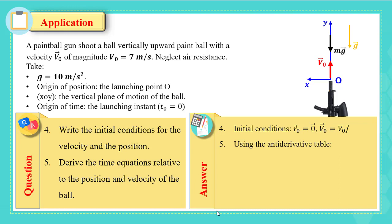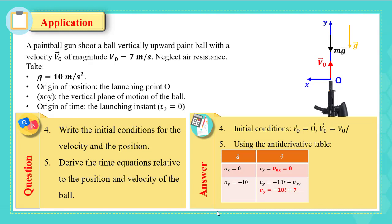The acceleration components: aₓ = 0 and aᵧ = −10 (negative because it is opposite to the positive y-axis). For velocity: vₓ = 0, and vᵧ = −10t + v₀ᵧ = −10t + 7. For position: the x-component is 0 since there is no motion along x, while along y we have y = −5t² + 7t + y₀, and since y₀ = 0, the final equation is y = −5t² + 7t.